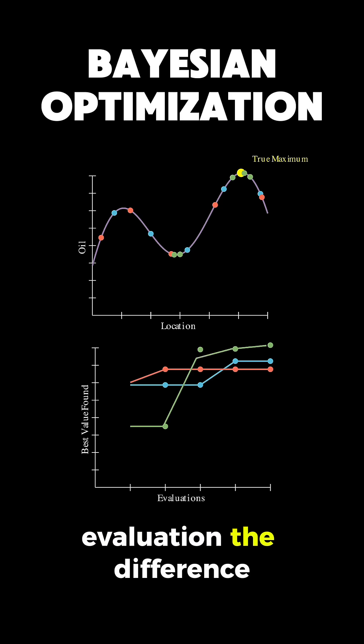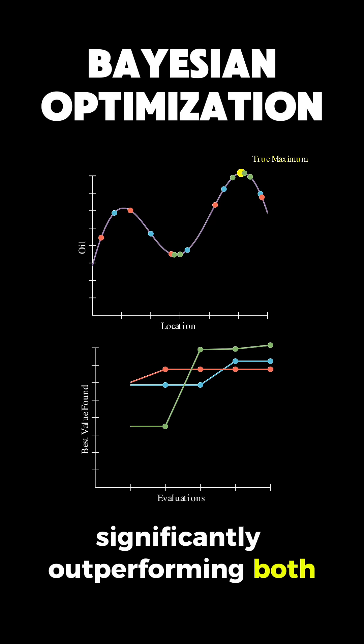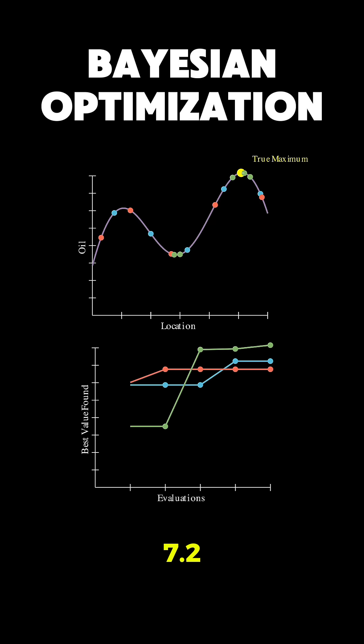By the fifth evaluation, the difference is striking. Bayesian optimization reaches a value of around 8.2, significantly outperforming both grid search with 7.2 and random search with 6.8.